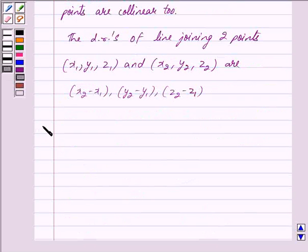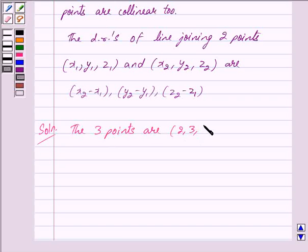Let us begin with the solution now. Now we are given the three points are (2, 3, 4), (-1, -2, 1), and (5, 8, 7).